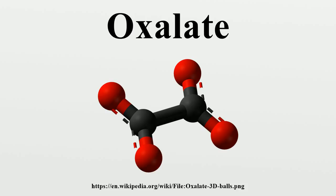Physiological effects: In the body, oxalic acid combines with divalent metallic cations such as calcium and iron to form crystals of the corresponding oxalates, which are then excreted in urine as minute crystals. These oxalates can form larger kidney stones that can obstruct the kidney tubules. An estimated 80% of kidney stones are formed from calcium oxalate.